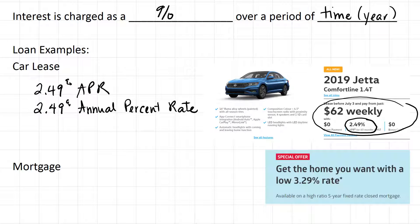Another time you're charged interest is when you borrow money to buy a house — that's called a mortgage. If you take a look at this special offer, it says get the home you want for as low as three point two nine percent, and that means it's three point two nine percent per year.